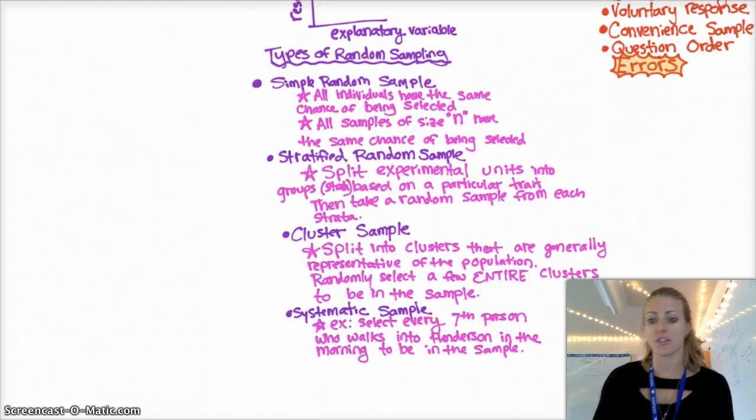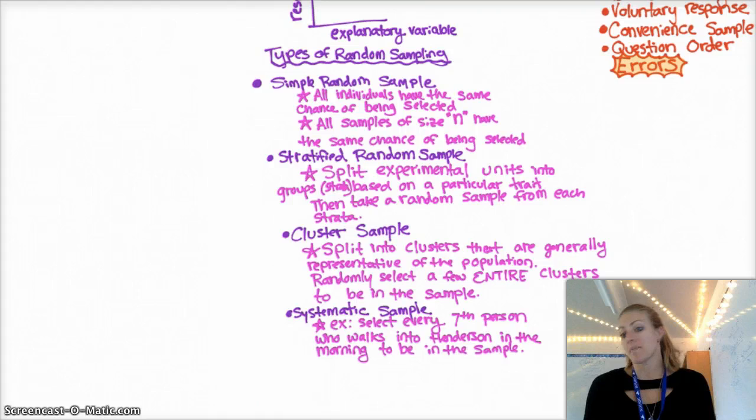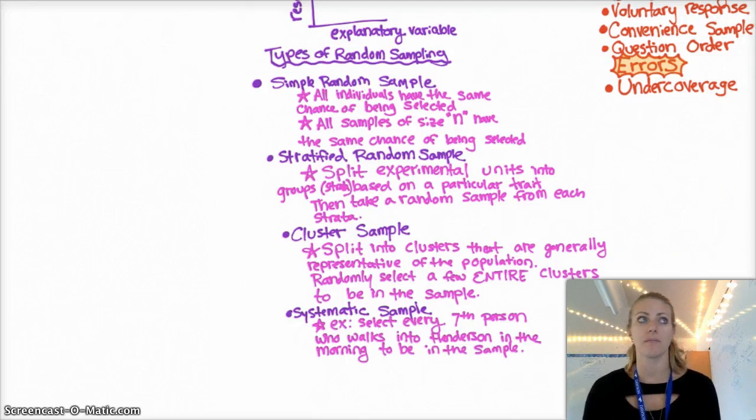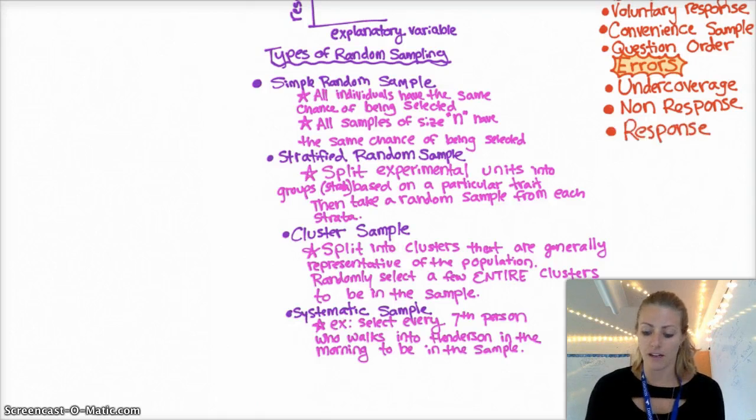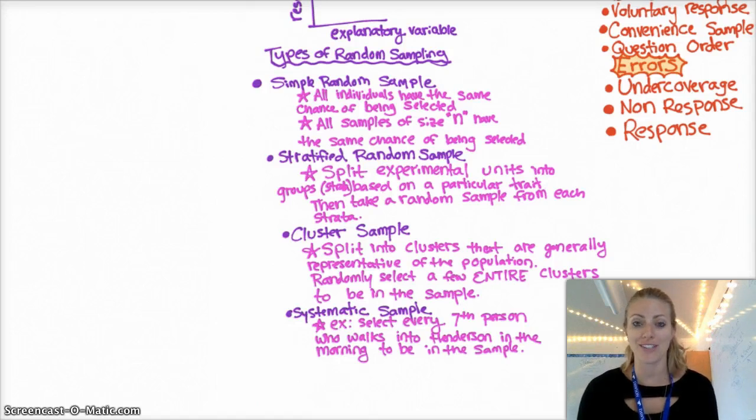Some other things that could be problems are just errors in your sampling method. So these may not be intentional, but undercoverage is when you miss an entire group of people just by the way that you're surveying or the way that you're taking a sample. Non-response is when you request somebody respond to a survey and they choose not to. And then a response bias is when the person who is responding either lies because they don't want to tell you the truth or because they hate taking surveys and they want you to get out of their face, whatever it may be. But they don't give you the full truth for whatever reason. And so that would be response bias.